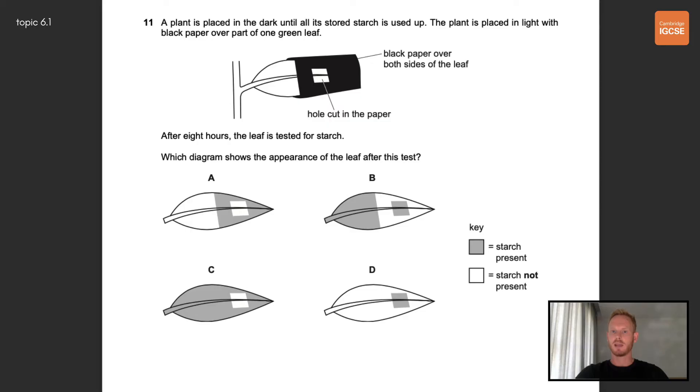Question number 11, a plant is placed in the dark until all its stored starch is used up. The plant is placed in light with black paper over part of one green leaf. After eight hours, the leaf is tested for starch. Which diagram shows the appearance of the leaf after this test? Because starch is made from the products of photosynthesis, we'd expect to see starch in the parts of the leaf that were exposed to light. So the base of the leaf nearest the stem and where the hole was cut in the paper. The correct answer is therefore B.